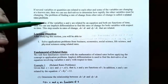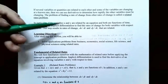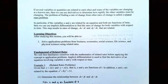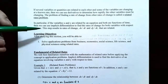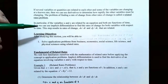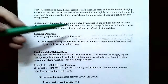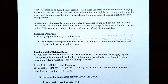In particular, if the variables x and y are related by an equation and both x and y are functions of time, then we can use implicit differentiation to find the rates of change for both variables with respect to time t.